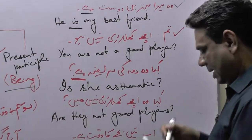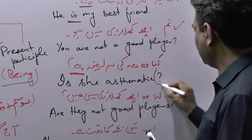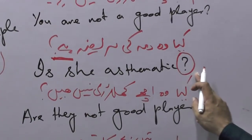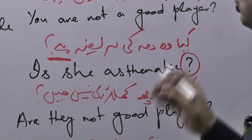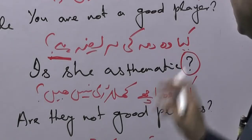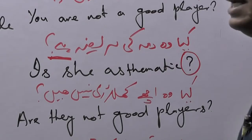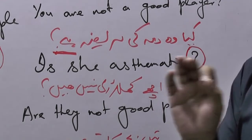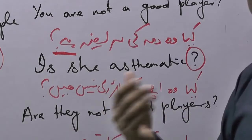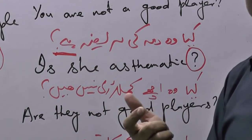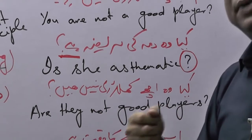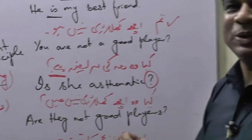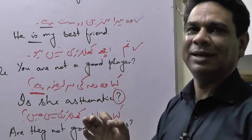For interrogative, move the linking verb before the subject and place a question mark at the end of the sentence. Don't forget to place the sign of interrogation, otherwise you'll be given no credit. Negative interrogative example: 'کیا وہ اچھے کھلاڑی نہیں ہیں' — Are they not good players? Never forget to place this sign of interrogation.